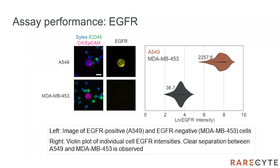Bringing all these development steps together, this is an example of what the output of an assay looks like. Here, the positive cell line, A549s, show clear EGFR expression, while the negative cell line, MDA-MB-453s, have no expression.